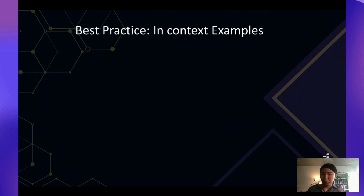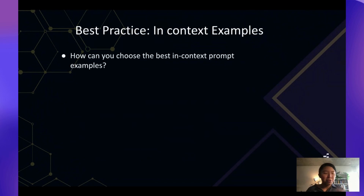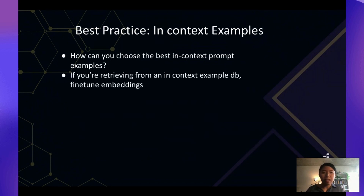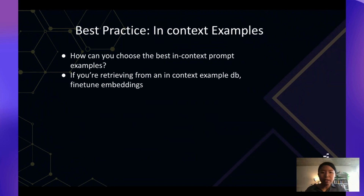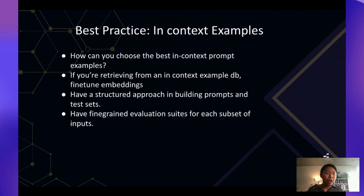We're all thinking about in-context examples. If you're using off-the-shelf models, there are many best practices, but in terms of choosing in-context examples, it's really important to maintain a prompt database. With this prompt database, you'll typically use some sort of embedding for retrieval, and it's also important to fine-tune these embeddings to make sure they're catered to your specific use case. Beyond that, you need a structured approach to building prompts, test sets, and fine-grained evaluation suites so you know exactly where your model is going wrong.